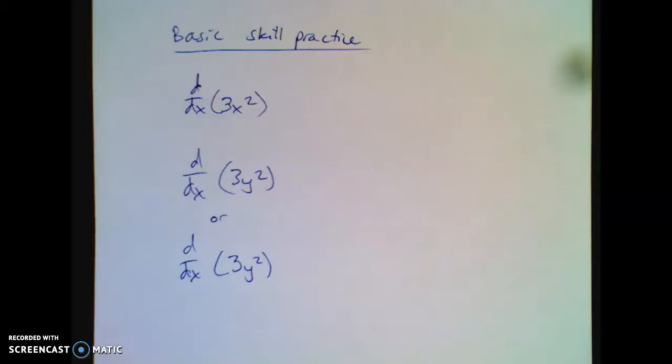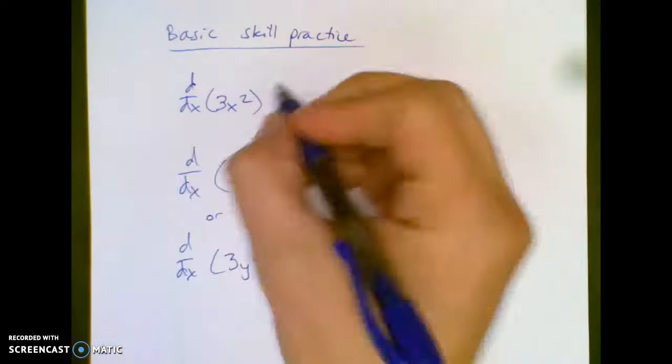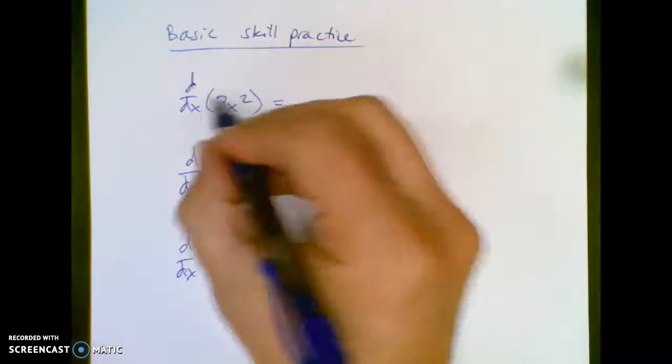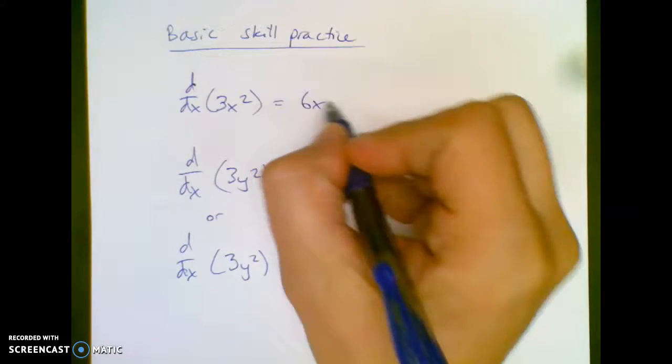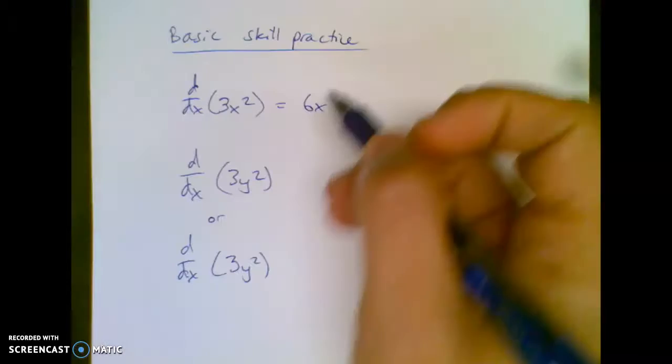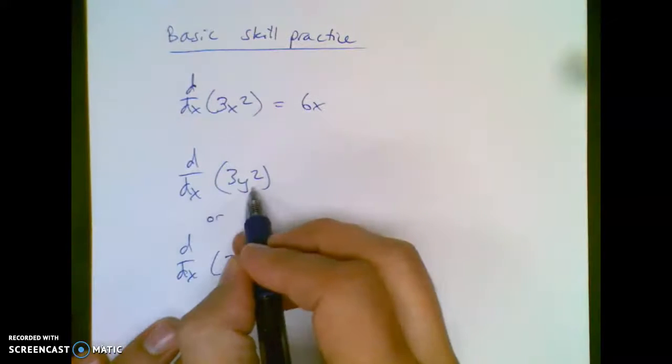Okay, so now that you have a basic idea of how the problems work, I want to take a step back and make sure you're good at the basic skill practice. If you're asked to differentiate 3x² with respect to x, it's pretty easy. It just becomes 6x, like you always have. You don't have to worry about putting dx over dx or any penalty.